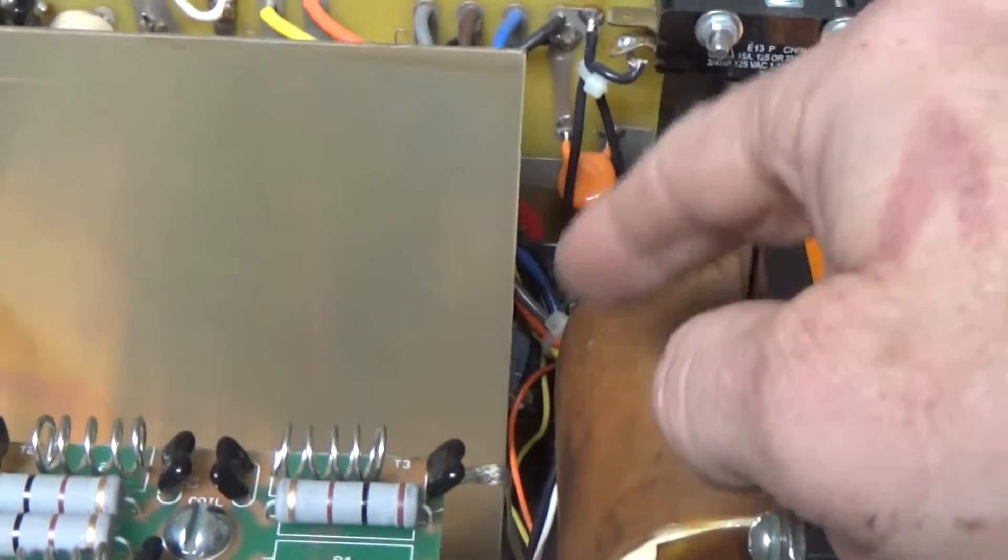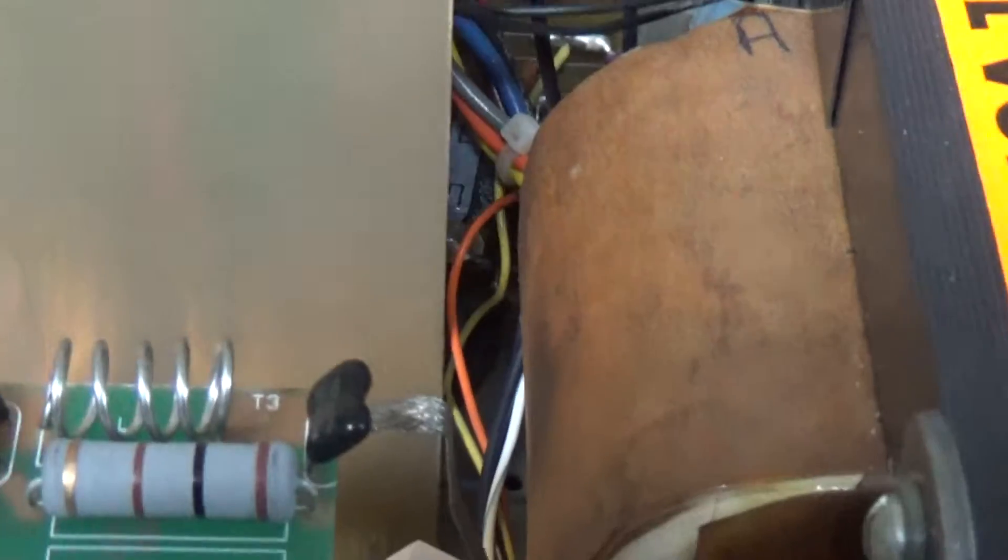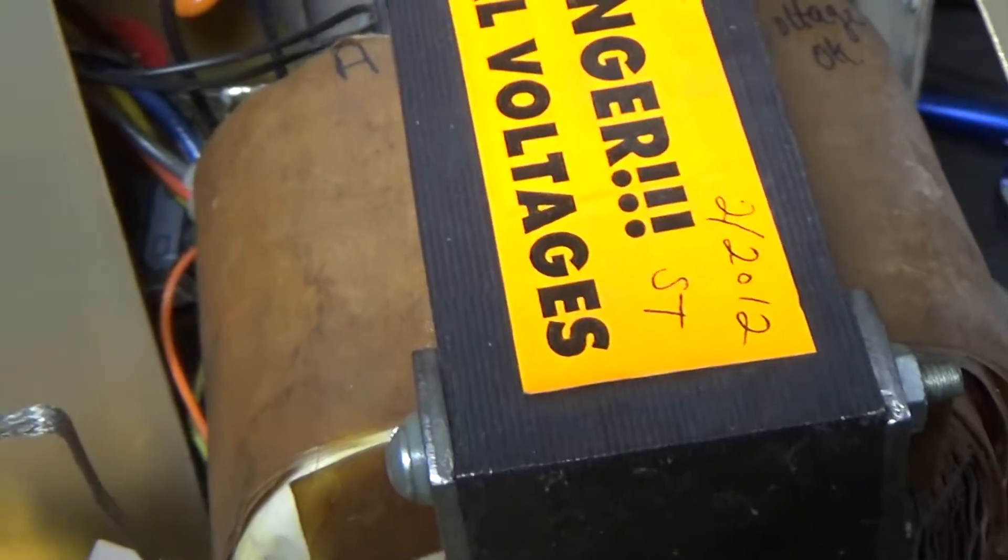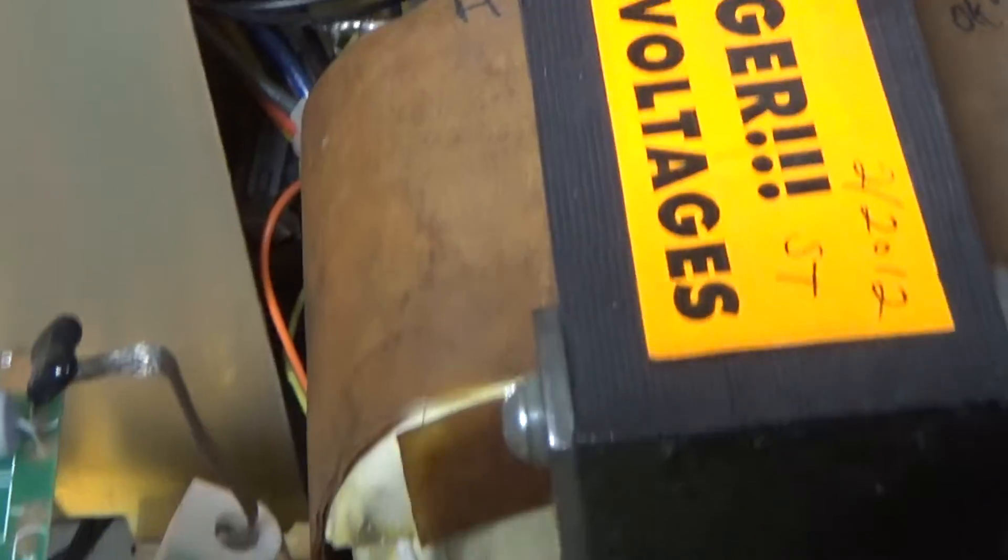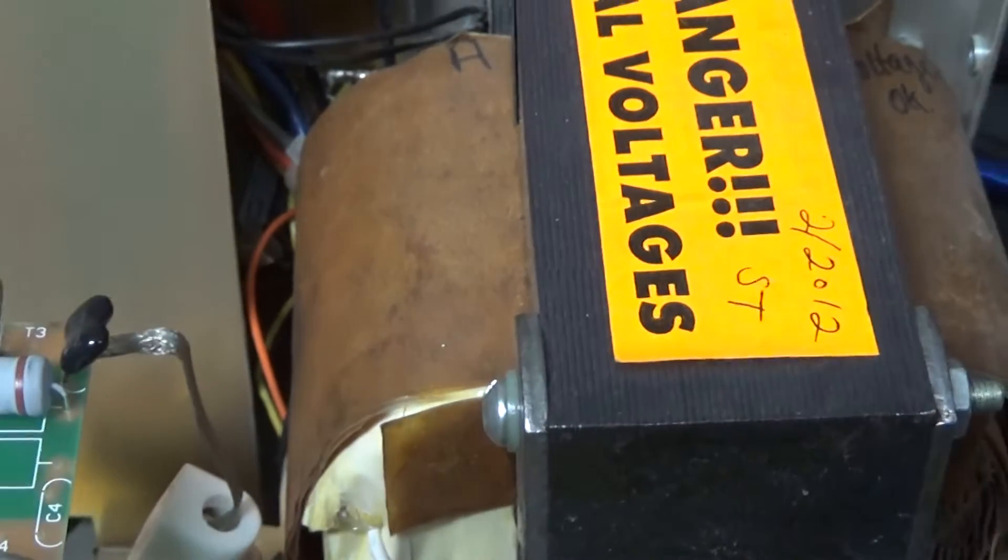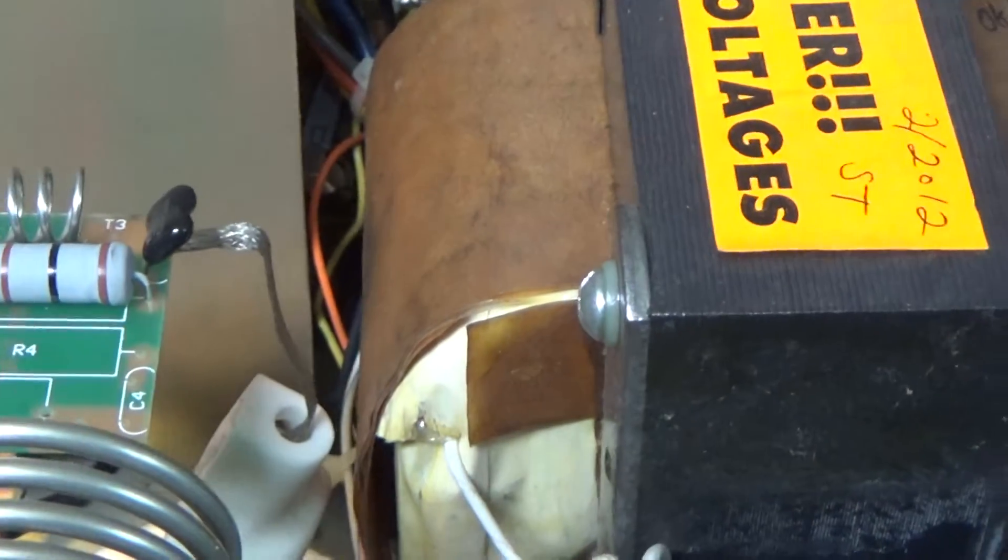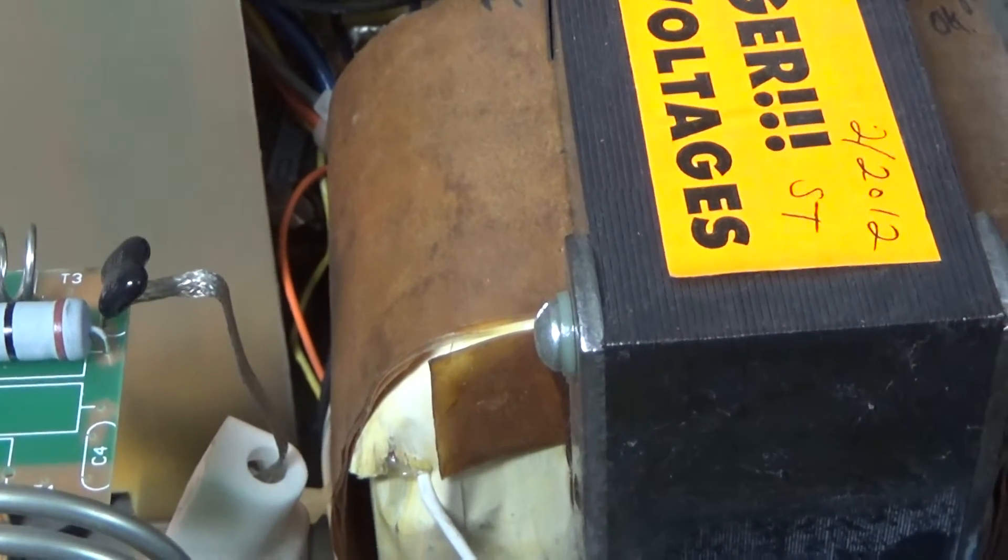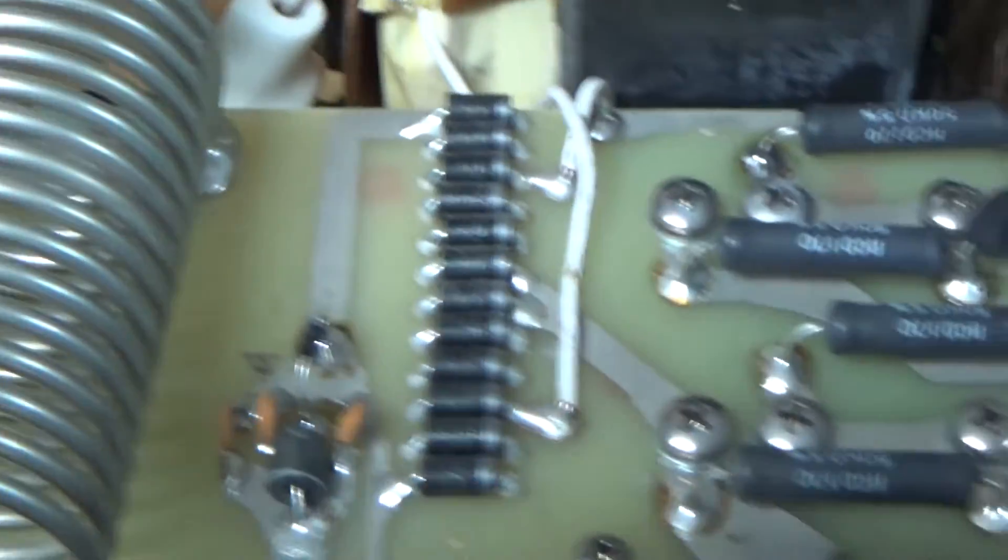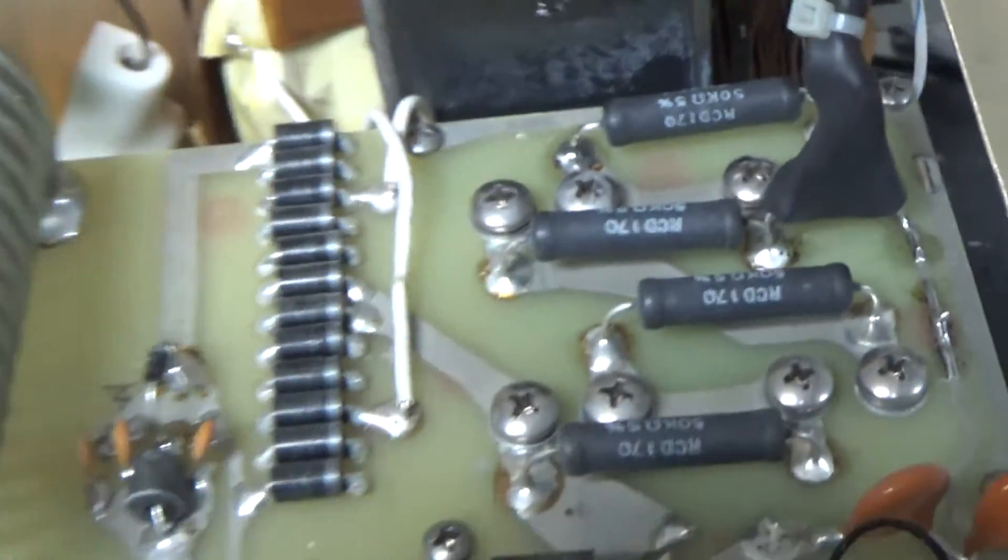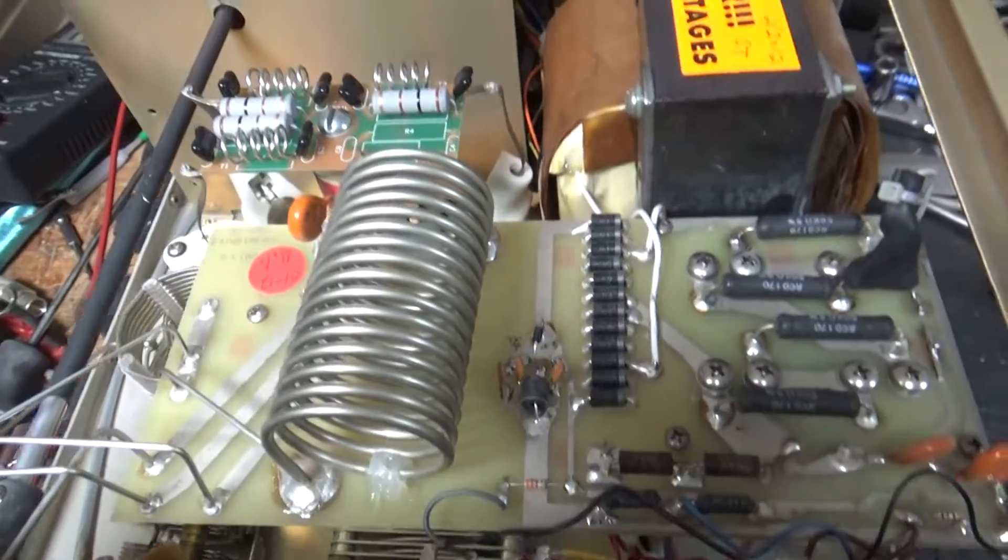So someone really burgered up the board, whoever did the bias mod. So I fixed that and connected the bias mod over here instead to the center tap wire for the filament. See it's all done up nice. Replaced the meter protection diode.